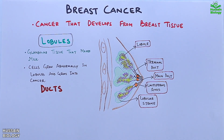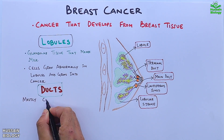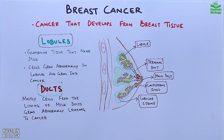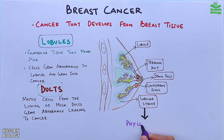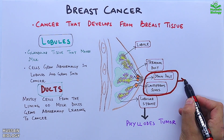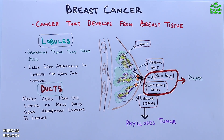The second important structures are the ducts. Mostly cells from the lining of milk ducts grow abnormally, leading to cancer. Then we have phyllodes tumors — these are breast tumors that start in the connective tissue of the breast, as in lobular stroma. When we get a tumor in the main ducts and lactiferous sinus near the opening of ducts, we get Paget's disease of the breast.